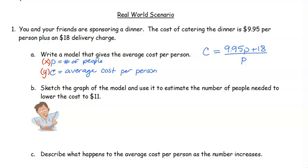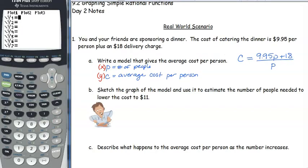Sketch the graph of the model and use it to estimate the number of people needed to lower the cost to $11 per person. So if you don't have your calculator out, go ahead and get it out. We enter our equation in. Don't forget that when you enter the equation in, we have to put those parentheses around the numerator. So we've got 9.95X plus 18, close that parentheses, divided by X.